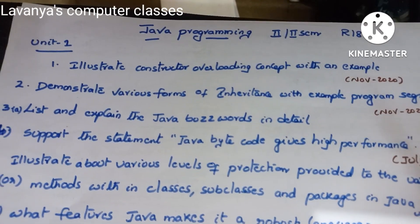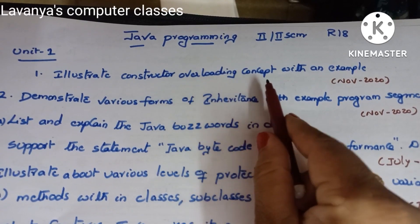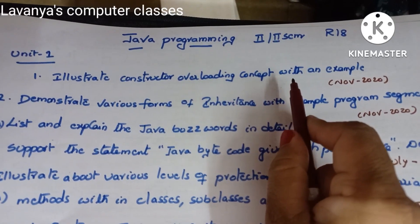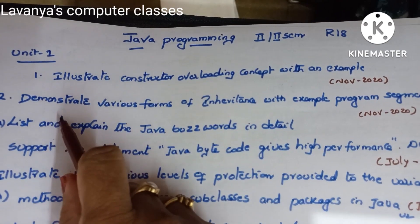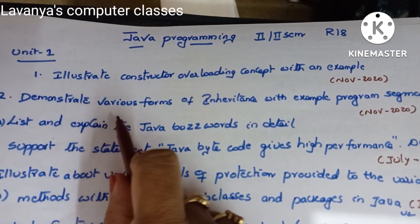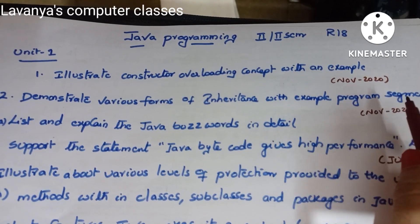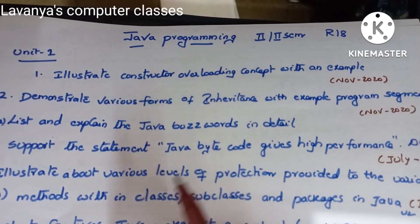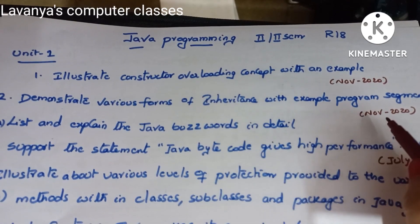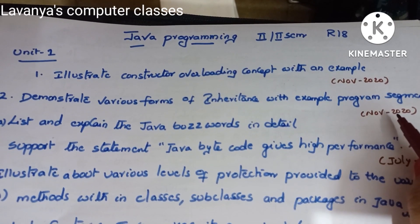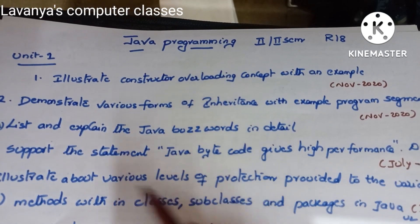Unit one questions: the first question is 'Illustrate constructor overloading concept with an example' — that is from November 2020, 15 marks. The second question is 'Demonstrate various forms of inheritance with example program segments.' Inheritance is a very important concept that appears in almost all years. These are from November 2020, which was the corona pattern, so mostly two questions came from unit one.